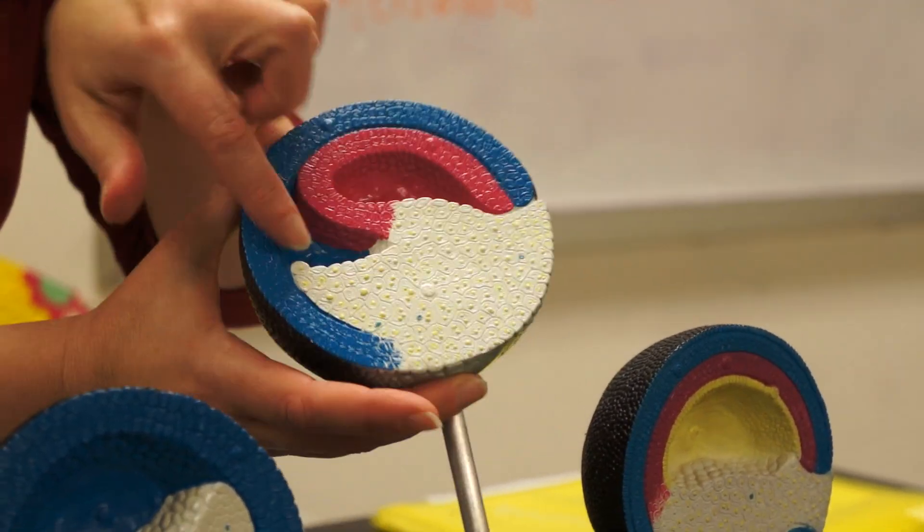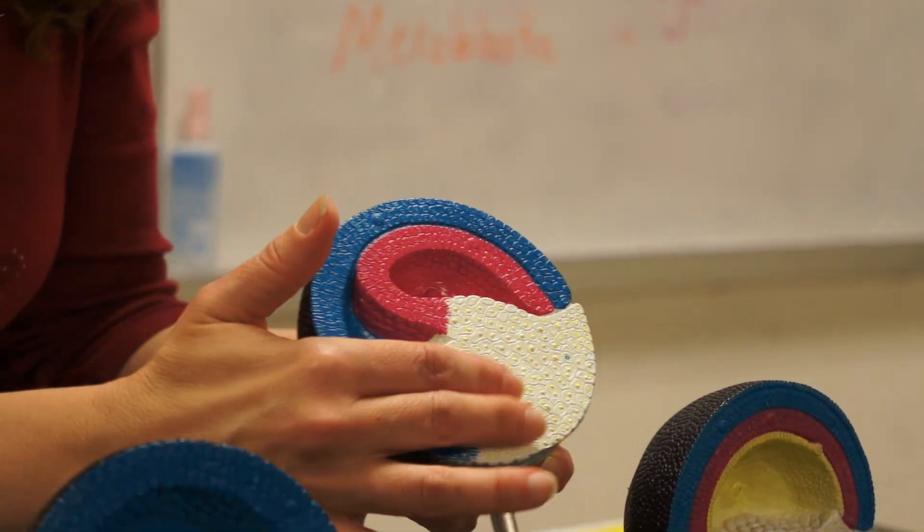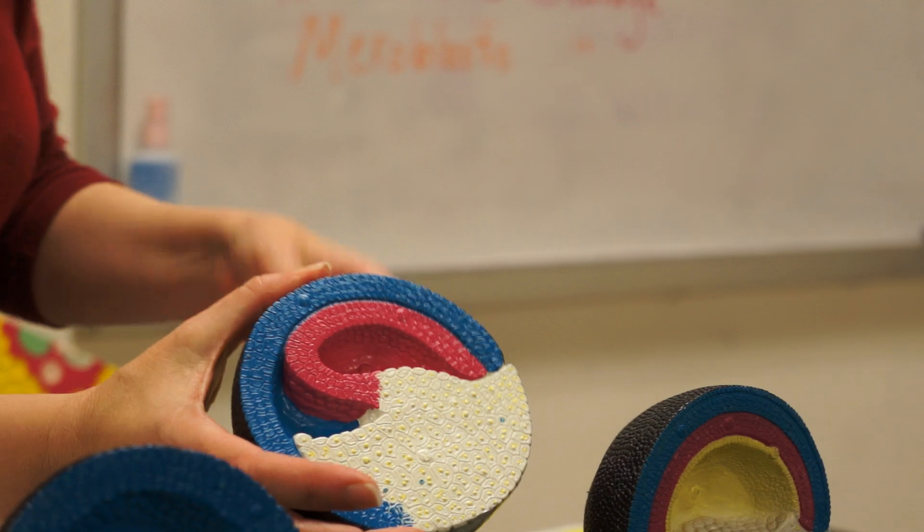This area here would be what's left of the blastocele, the remnant blastocele, and all of the yolk cells are going to end up inside the archenteron.